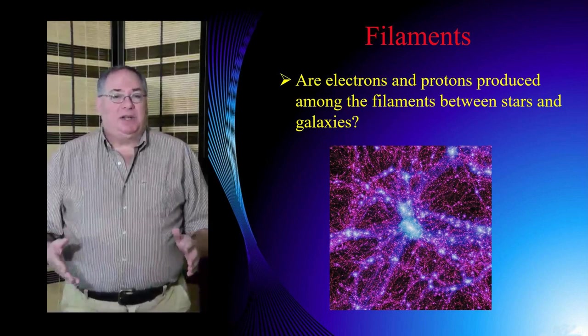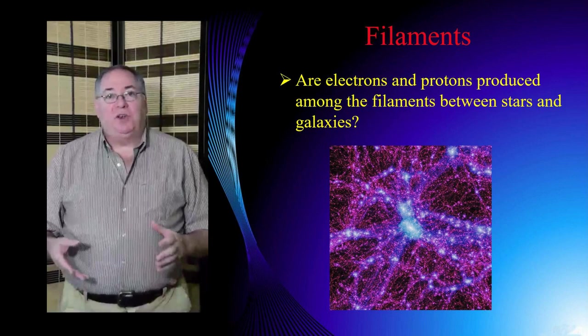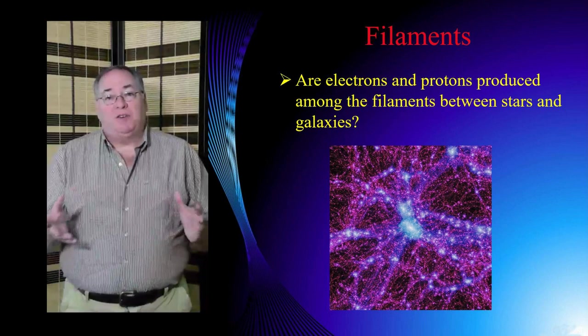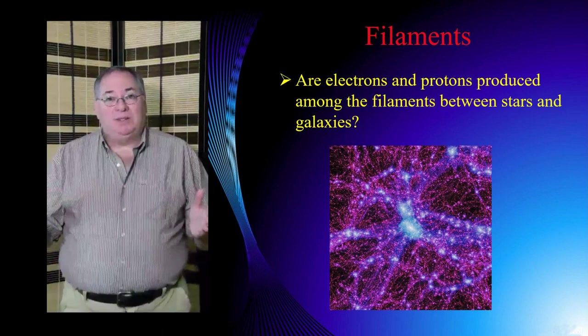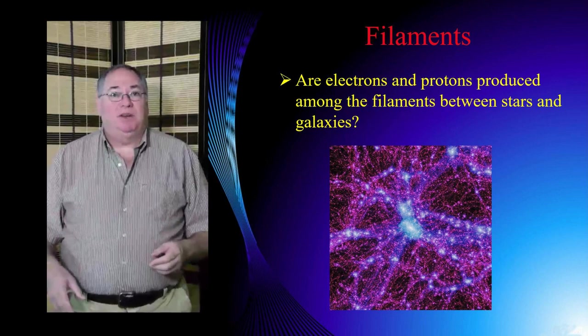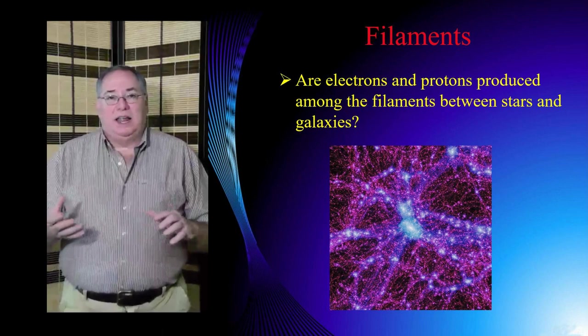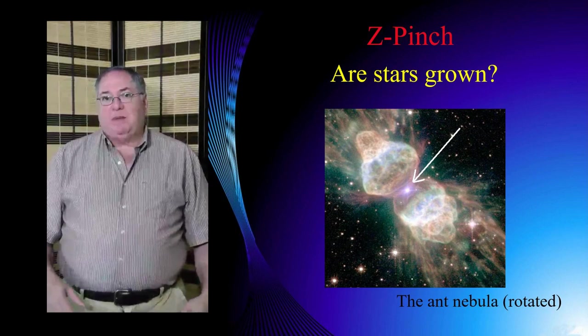To get some idea about how proton-electron production might happen, we can consider the filamentary structures in space. That when we map galaxies, as this picture shows, we have a picture of our universe that makes it look like the galaxies form along these strings or filaments, and these filaments are of plasma. And when we look at the stars within galaxies, we also see similar filamentary structures where it appears like stars appear along the filaments. So there appears to be a tie-in with production of galaxies and stars and plasma filaments.